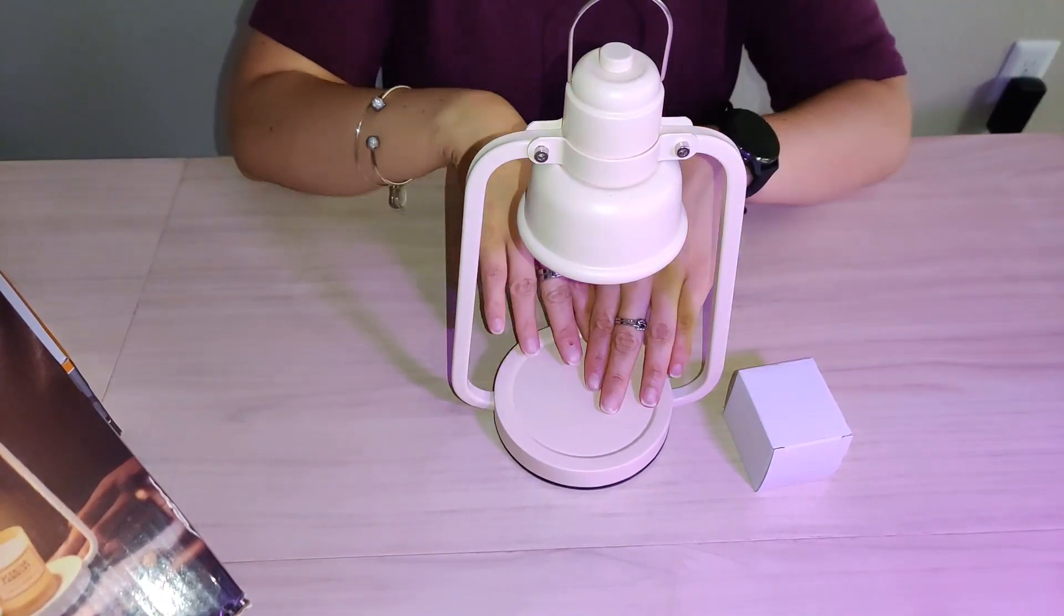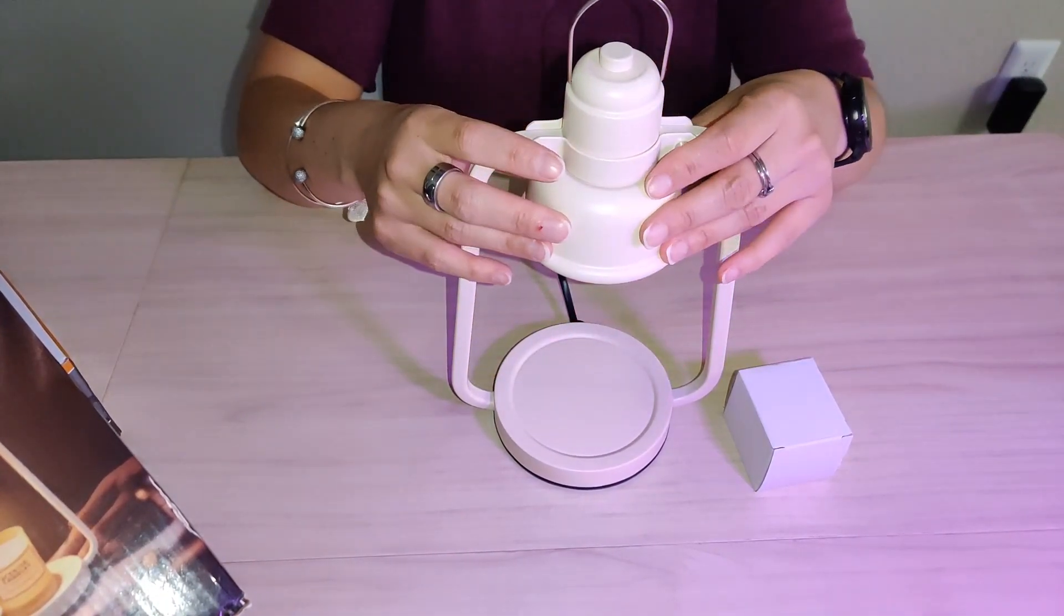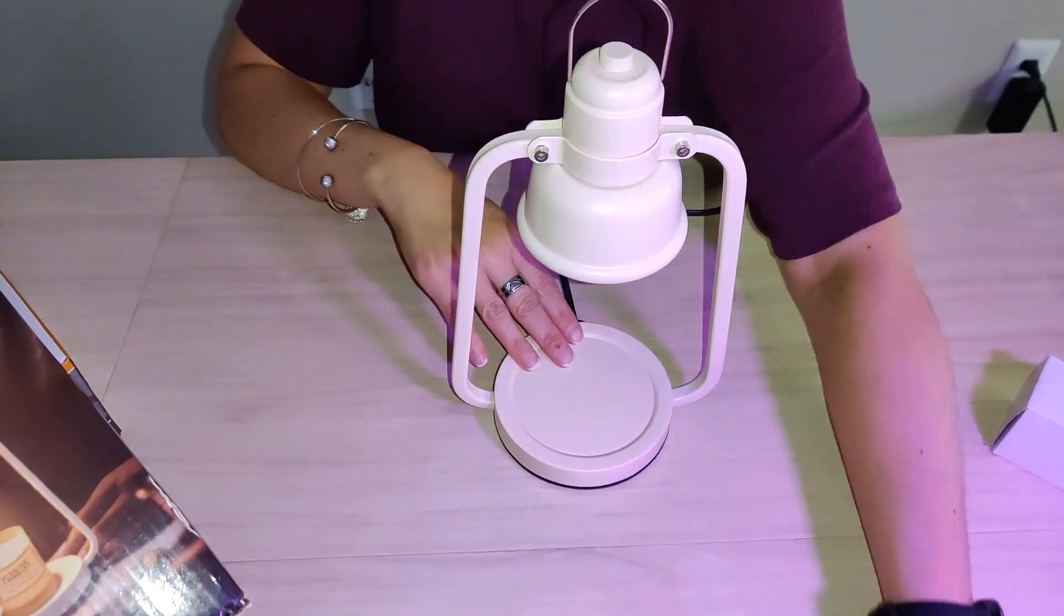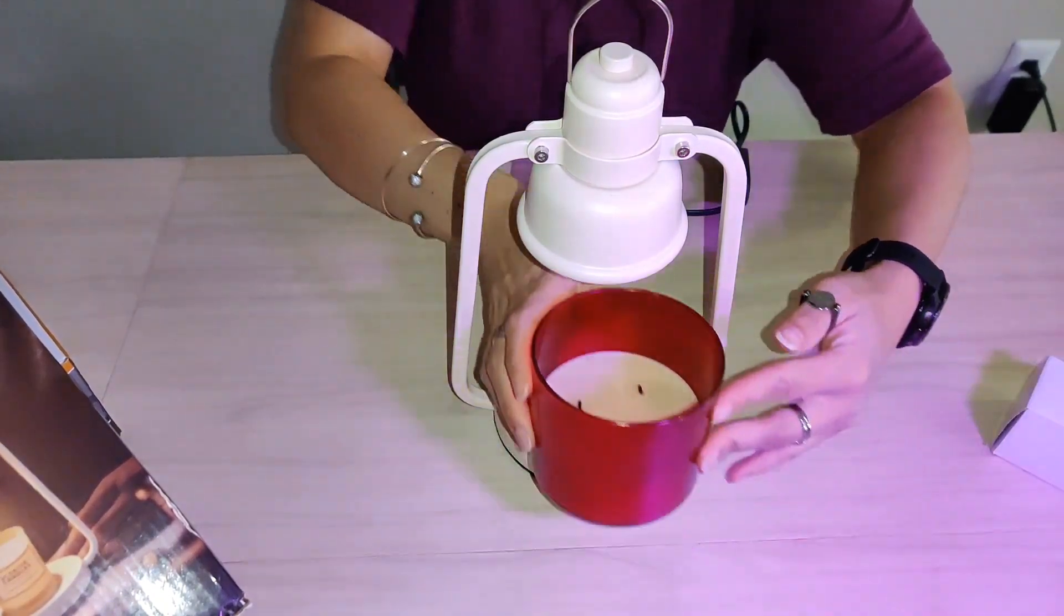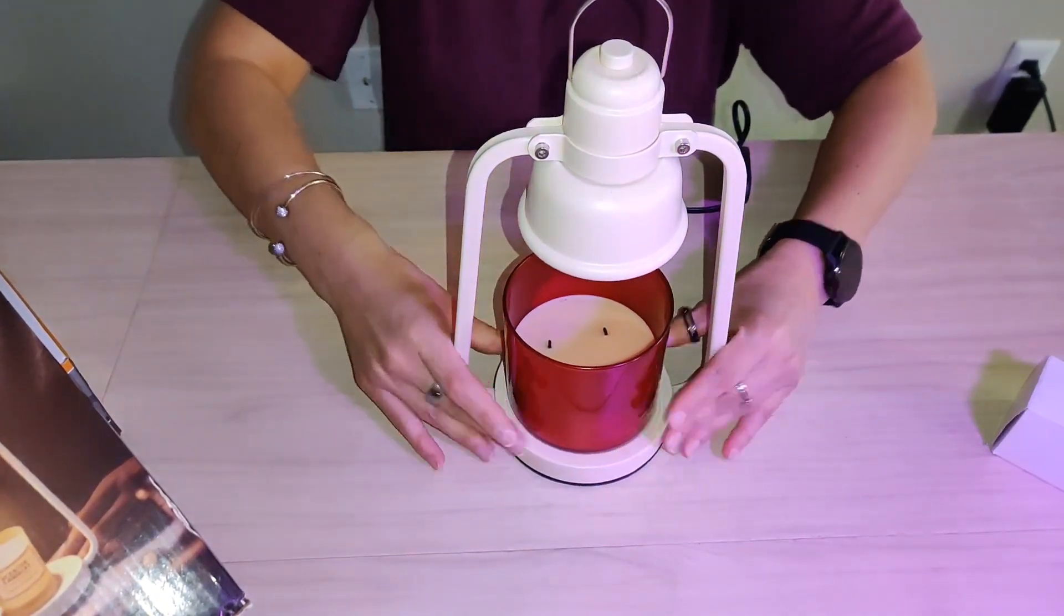And now this light is adjustable, so you can go ahead and adjust the brightness of the light. Already plugged in. Let's bring out a candle. We're going to go ahead and set this candle right here.